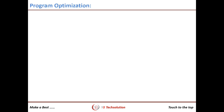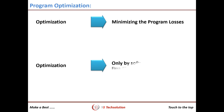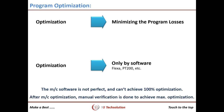To increase productivity, the first activity is program optimization — minimizing programming loss. Normally, program optimization is done using software. But as per my experience, you cannot achieve 100% optimization with machine software alone. Manual verification like simultaneous pickup, minimizing the nozzle chain, use of pre-rotation function, angle and mounting distance need to be verified after software optimization to achieve the best cycle time.